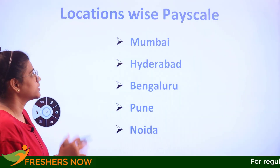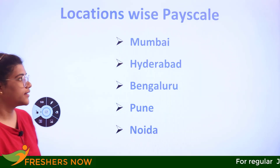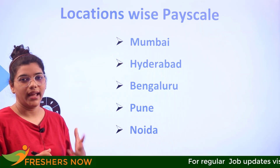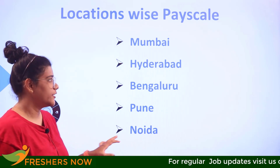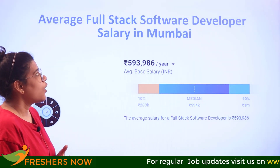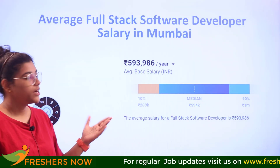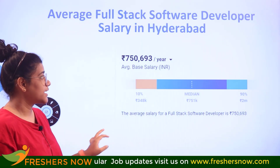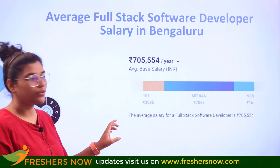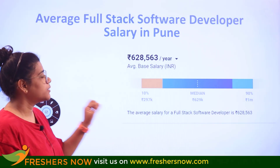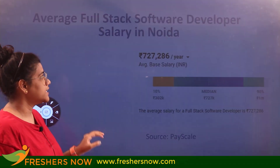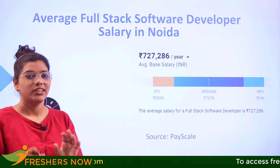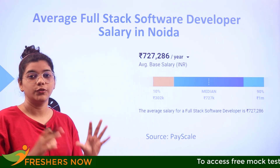Looking at location-wise salaries across major Indian cities: Mumbai — ₹5 lakhs 93 thousand; Hyderabad — ₹7 lakhs 50 thousand; Bengaluru — ₹7 lakhs per annum; Pune — ₹6 lakhs 28 thousand; and Noida — ₹7 lakhs 27 thousand per annum.